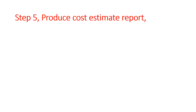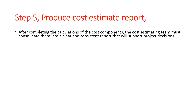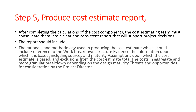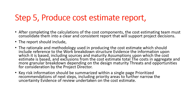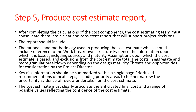Step 5: Produce Cost Estimate Report. After completing the calculations of the cost components, the cost estimating team must consolidate them into a clear and consistent report that will support project decisions. The report should include: the rationale and methodology used in producing the cost estimate, which should include reference to the work breakdown structure, evidence and the information upon which it is based, including sources and maturity; assumptions upon which the cost estimate is based; and exclusions from the cost estimate total. The costs should be presented in aggregate and in a more granular breakdown depending on the design maturity, along with threats and opportunities for consideration by the project director. Key risk information should be summarized within a single page, with prioritized recommendations of next steps, including priority areas to further narrow the uncertainty and evidence of review undertaken on the cost estimate. The cost estimate must clearly articulate the anticipated final cost in a range of possible values reflecting the confidence of the cost estimate.